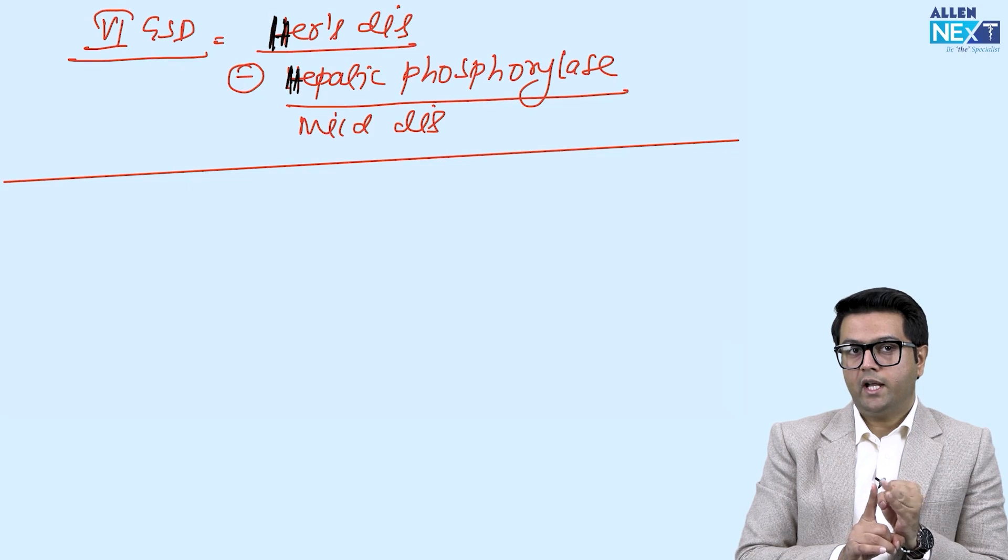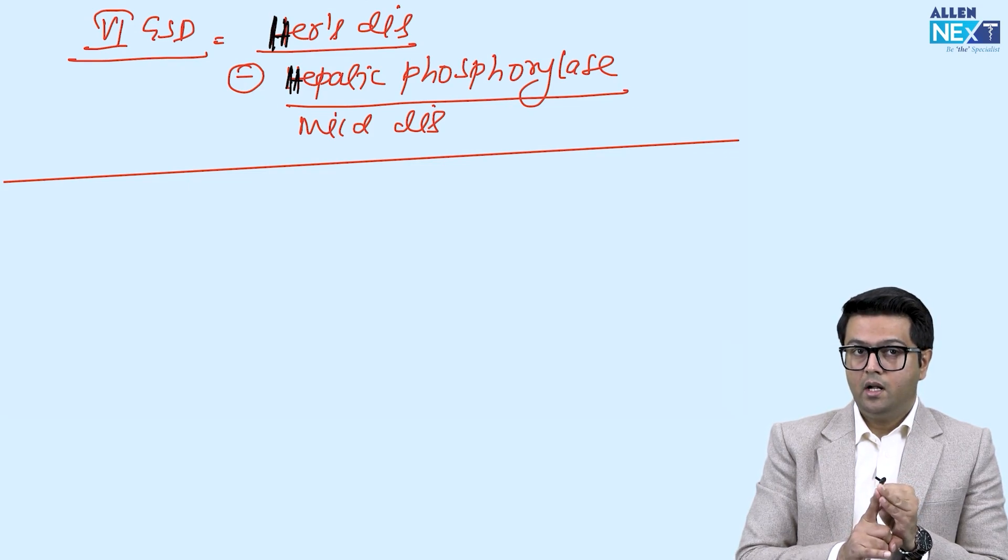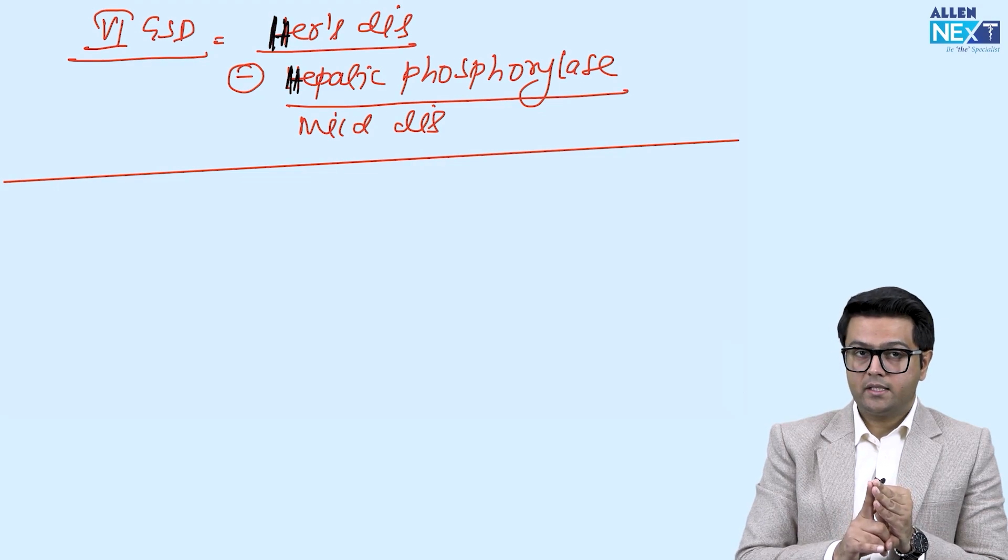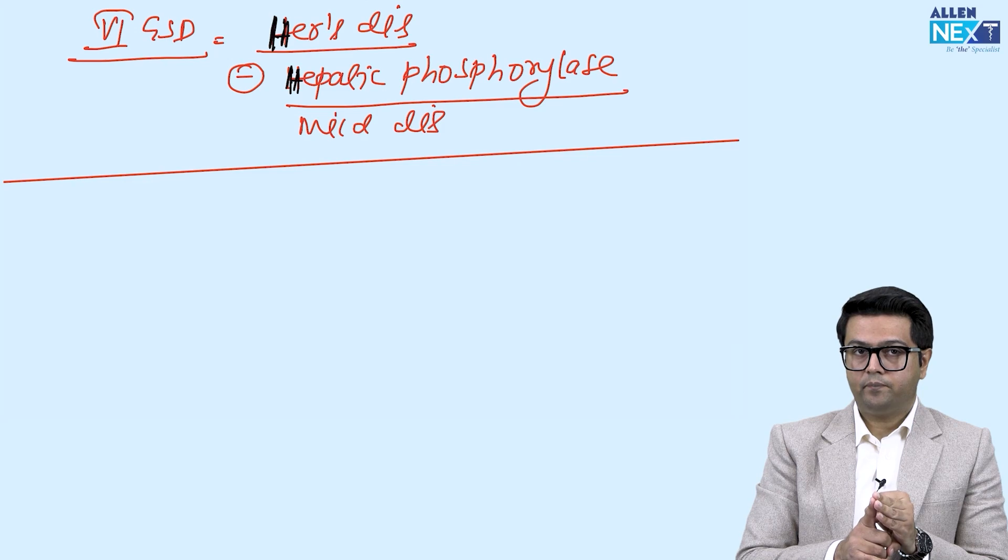To summarize, if you find muscles affected, it is not Von Gierke's and Hers. If you find normal structure of glycogen, it cannot be type 3 and type 4, that is Cori's and Anderson's. If you find lysosome has glycogen, only one possibility, that is Pompe's disease. Clear?